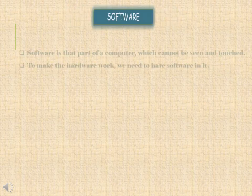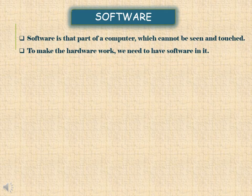Now we will study about the second basic part of a computer system, that is software. Software is the part of a computer which cannot be seen and touched. To make the hardware work, we need to have software in it. For example, in a music system, the speakers, CD, and DVD which you can touch and see are hardware. But the songs or music recorded on a CD or DVD cannot be seen or touched — that is software.